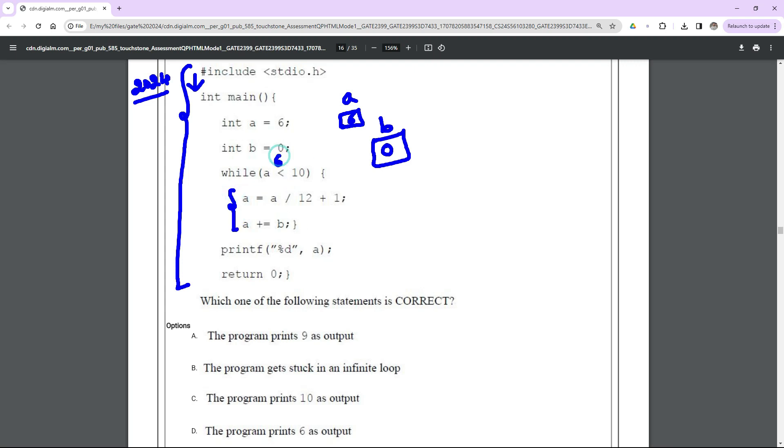Is a less than 10? Yes, 6 less than 10, yes it is true. When it is true it is going to enter into the block. a equal to a by 12, right, means 6 by 12 will yield 0, 0 plus 1, so 0 plus 1 is 1 which is updating here.